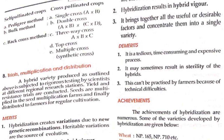Seeds are multiplied in the seed multiplication farms and finally distributed to farmers for regular cultivation. Merits: hybridization creates variation due to new genetic recombination. Heritable variations are the source of evolution. Hybridization results in hybrid vigor; it brings together all the useful or desirable factors and concentrates them into a single variety.